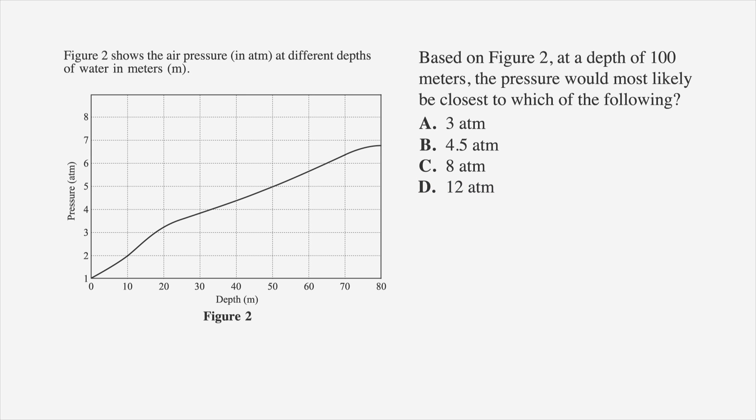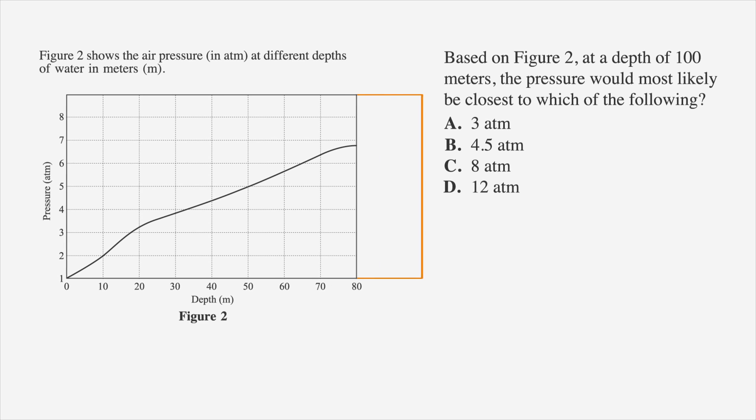When you look at the graph, you'll see that it represents depths no greater than 80 meters, so you'll need to extrapolate to find the closest value. You can take out your pencil and extend the line to where it would logically fall on the graph at a depth of 100 meters. Draw your line to the vertical axis to get an estimation, and we see it's about 8 atmospheres. So, choice C, 8 atmospheres, is the best answer.